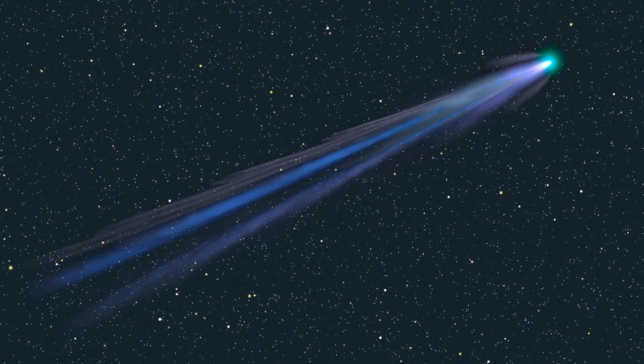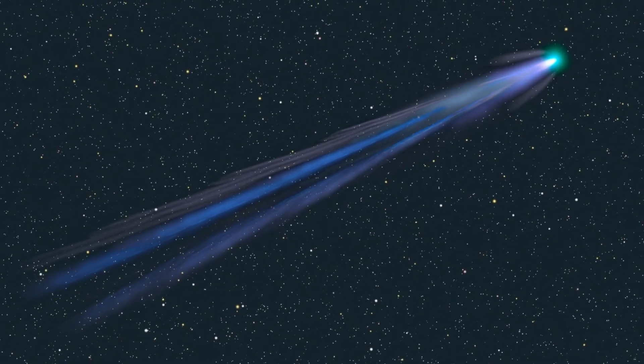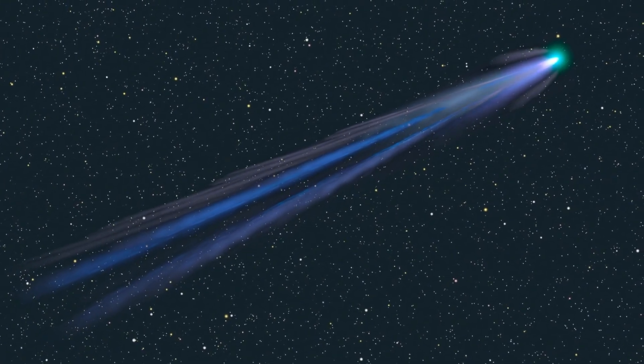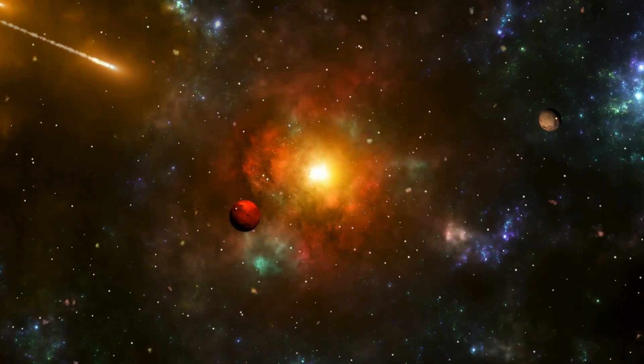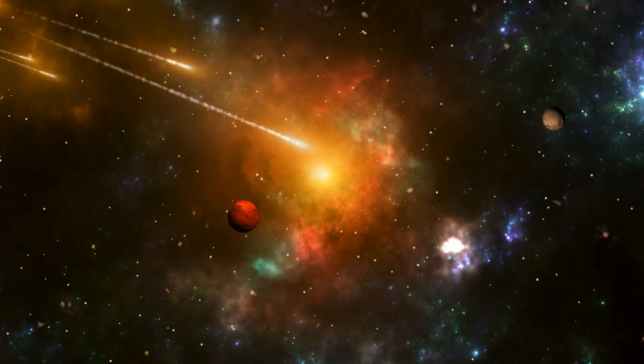By September, a normal, fan-shaped tail formed, though shorter than iconic comets like Hale-Bopp, which got much closer to the sun at 0.9 astronomical units in 1997.